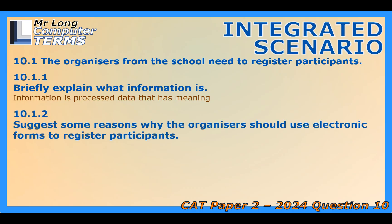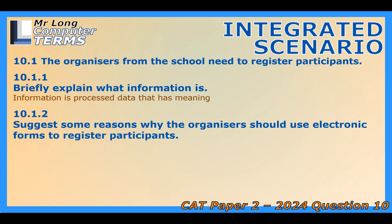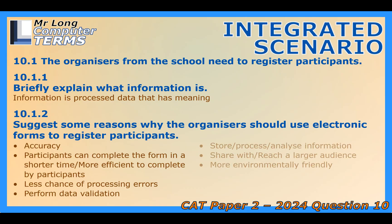That conversion starts with getting the data in: registration. The sources really push for electronic forms over paper. It's faster for athletes, better for the environment, but the main technical reason is data integrity. Paper forms lead to errors — misread handwriting, typos when someone keys it in, delays. Electronic forms let you do data validation instantly, the second the participant clicks submit. Let's unpack data validation — what are we actually checking to avoid messing up the database later?